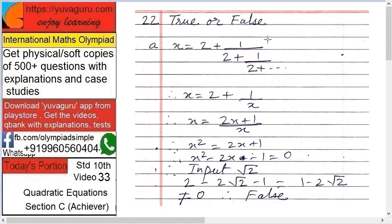Next is state true or false. There are 3 to 4 sub-questions to this. If x equals 2 plus 1 upon 2 plus 1 upon... and it goes on continuing, we have to check whether x equals 0 or not.